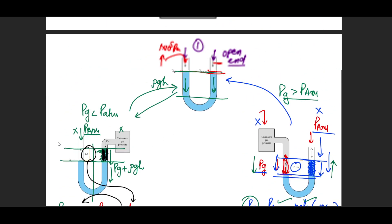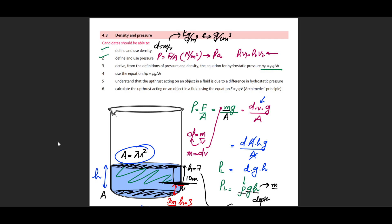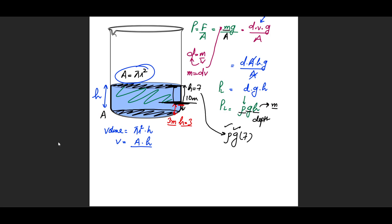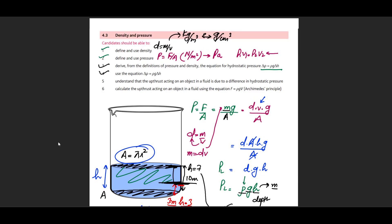So we have completed the first three syllabus points: we derived the ρgh formula, learned how to apply it using depth not height, and now we need to understand upthrust and Archimedes' principle.